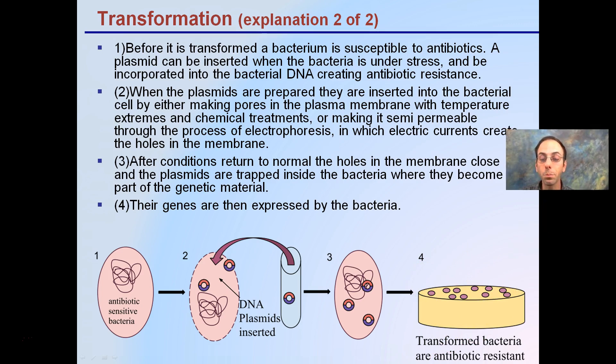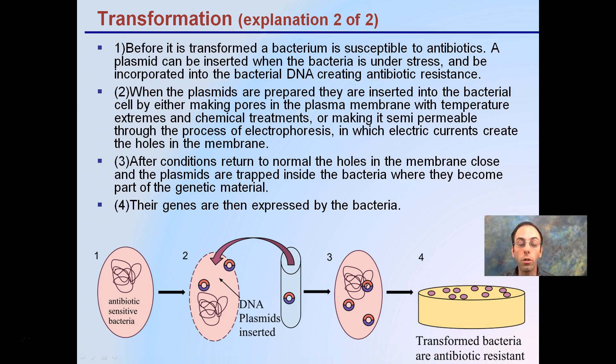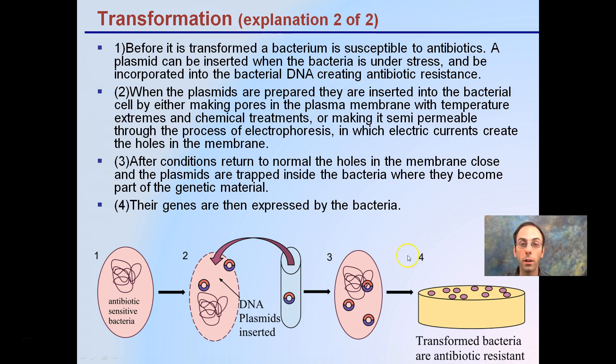In this case, the genes expressed by the bacteria could include antibiotic resistance, which is important for selecting certain bacteria colonies. This also occurs in nature in the general development of genetic and antibiotic resistance within a gene pool of bacteria.